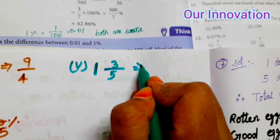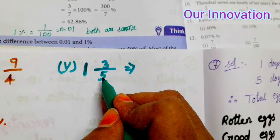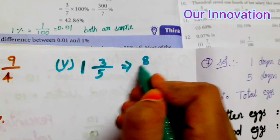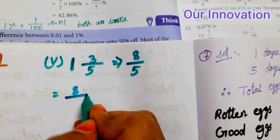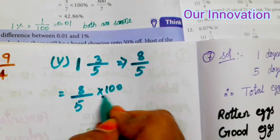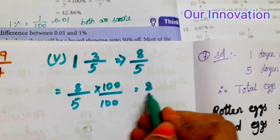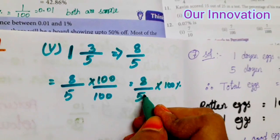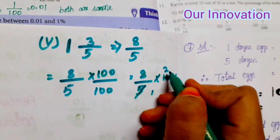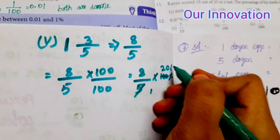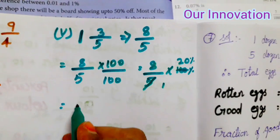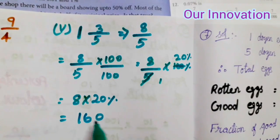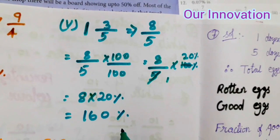Next: 1 and 3 by 5. Convert: 5 × 1 = 5, so 8 by 5. 8 by 5 is equal to 8 by 5 into 100 by 100, which equals 8 by 5 into 100 percentage. Cancel: 5 is 5, 2 × 5 = 10. So 8 into 20 percentage: 8 × 2 = 16, giving 160 percentage. This is the answer.